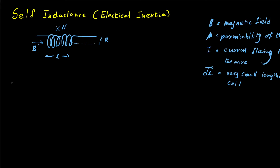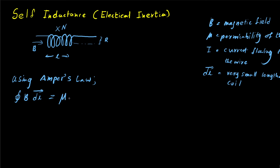We have to use Ampere's law. Using Ampere's law, we get the magnetic field inside the coil times the total length of the coil — the integral of dL — equals the permeability inside the core of the coil times the current flowing through the wire. Ampere's law is only described for a single loop, so if we have multiple loops — in this case N number of loops — we have to multiply Ampere's law by N for the total number of loops inside the coil.